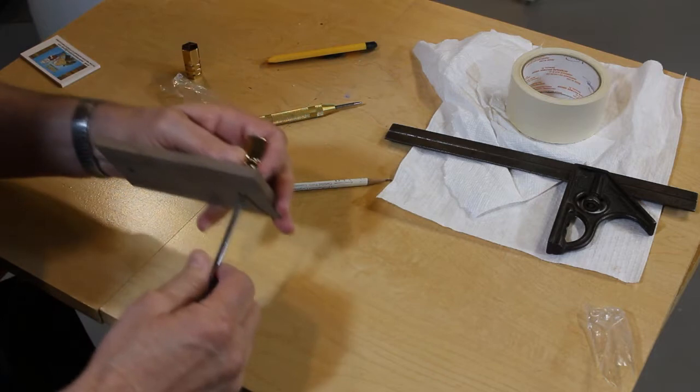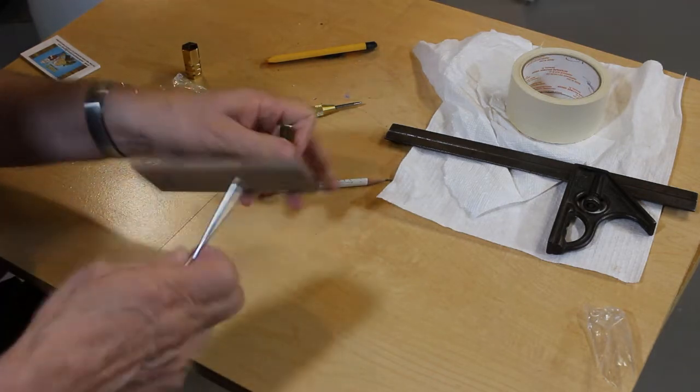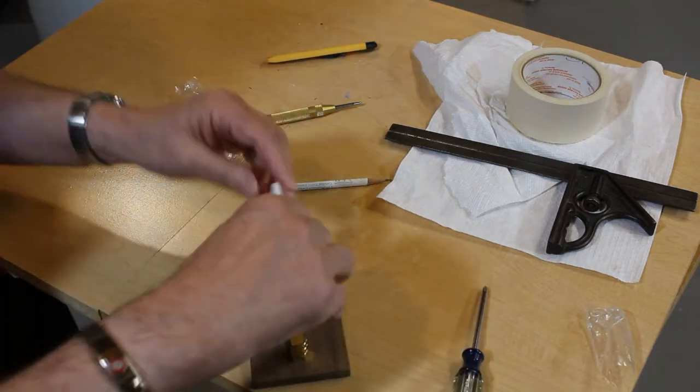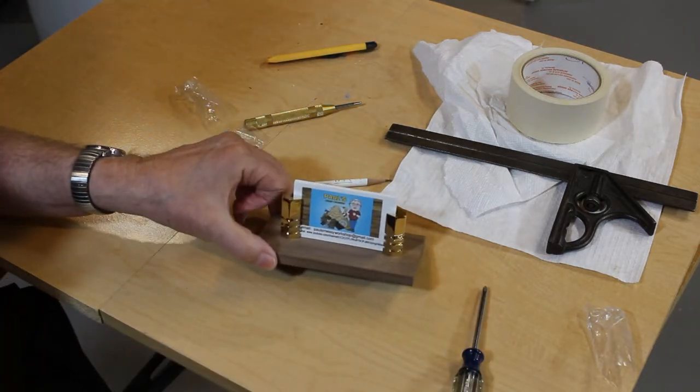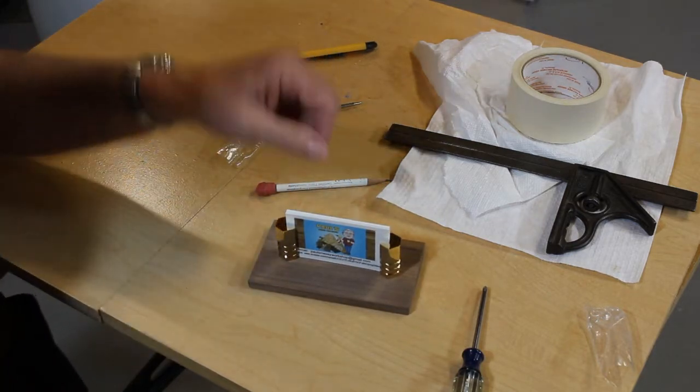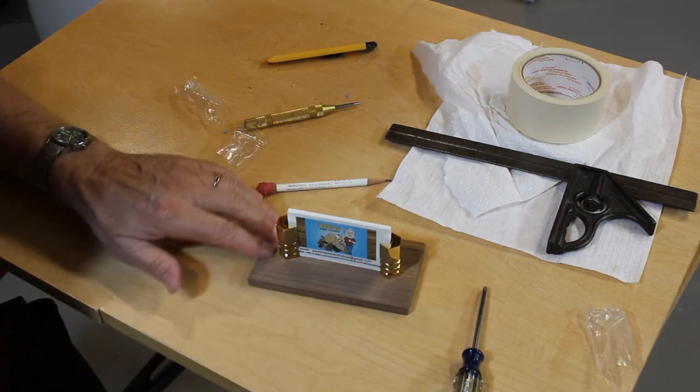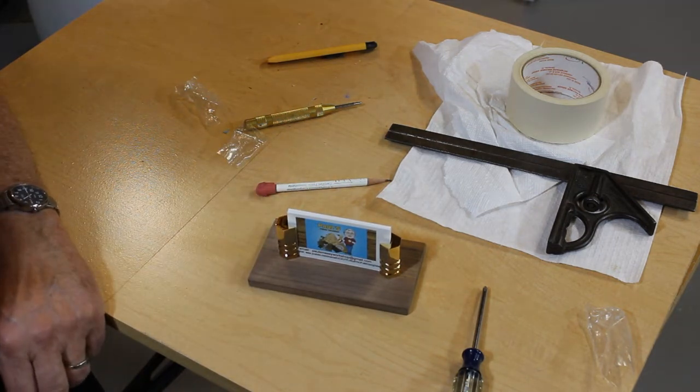And if everything fits, then I'll take it back apart and put some shellac on this. And that's what it looks like. So now that I know that everything fits, everything lines up, I'll go ahead and take these back off, give it a couple coats of shellac, and I'll be back.